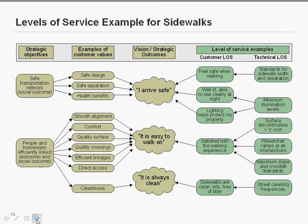Looking at a graphic for sidewalks: on the right-hand side you have technical levels of service — the things you know you do now. Moving to the left, you define what it means from a customer's point of view. Going to the far left are the strategic objectives of your organisation. Ideally you start with what the customer expects — outcomes like 'I arrived safe,' 'It's easy to walk on,' 'It's clean' — and then develop customer and technical levels of service from there.